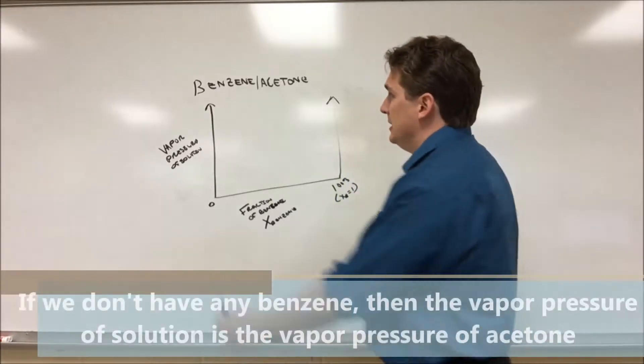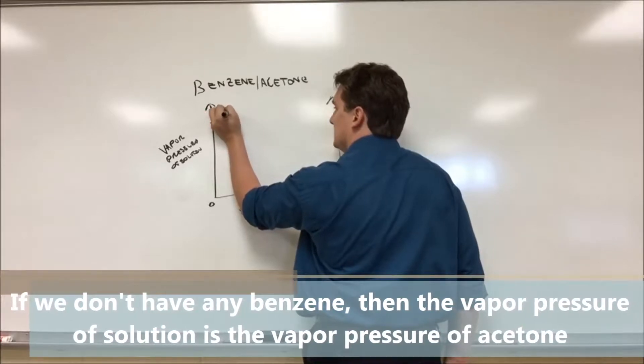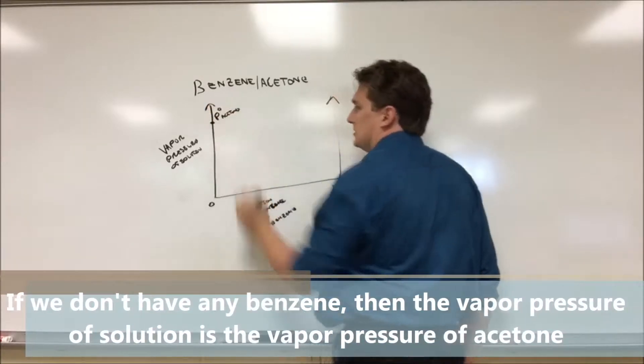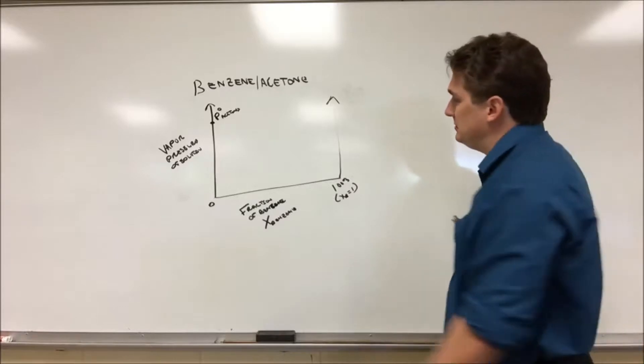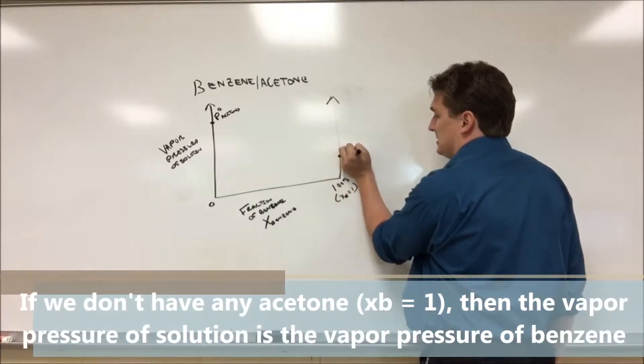Well, the answer is gonna be the vapor pressure of acetone. There's no benzene, it's pure acetone, and so our vapor pressure here has to be P naught of acetone. If we have a 100% benzene solution, we expect the vapor pressure to be the vapor pressure of benzene.